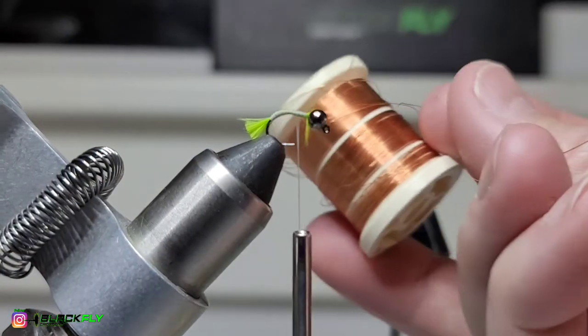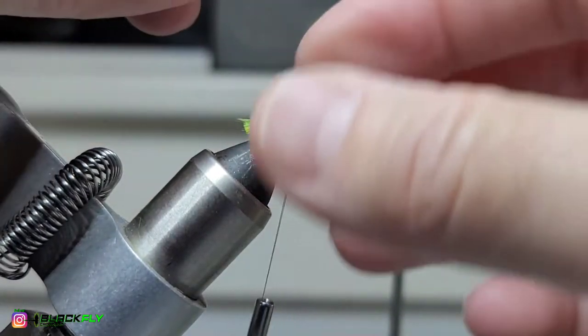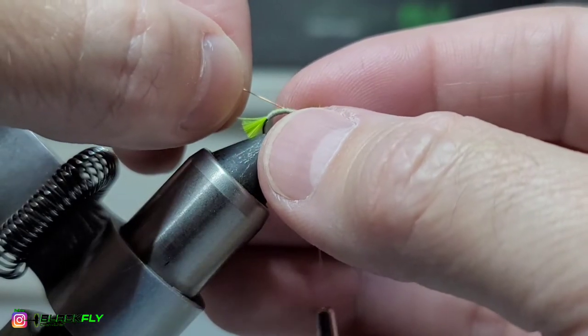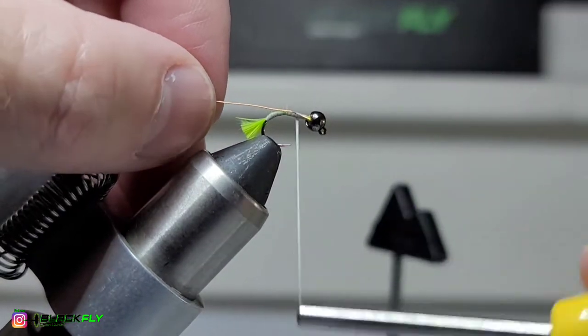Okay, so next just going to tie in a piece of fine copper, and I've just cut off about an inch and a half. Now I could build up a dam behind the bead. I won't need to with the amount of material that we use here. We're just going to take our little piece of copper here and tie her in.